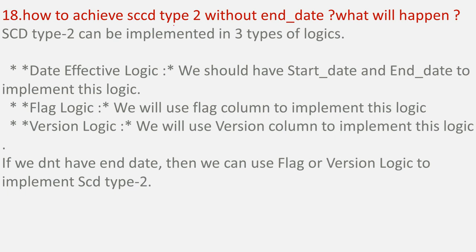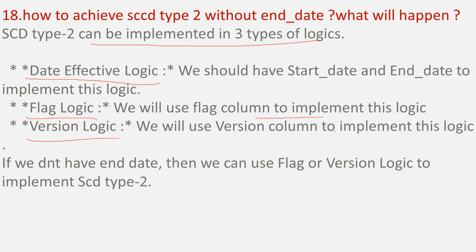The next question: how to achieve SCD Type 2 without an end date? SCD Type 2 can be implemented in three ways: date effective logic, which requires a start date and end date; flag logic, using a flag column; and version logic, using a version column. We have covered all three methods with practicals in our videos. If you don't have an end date, we go for flag logic or version logic to implement SCD Type 2.